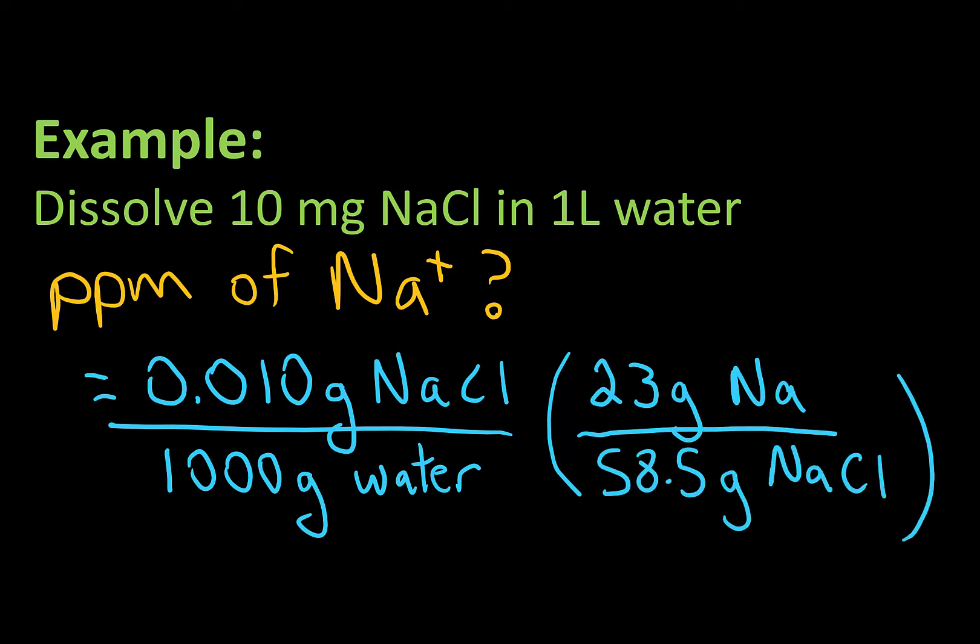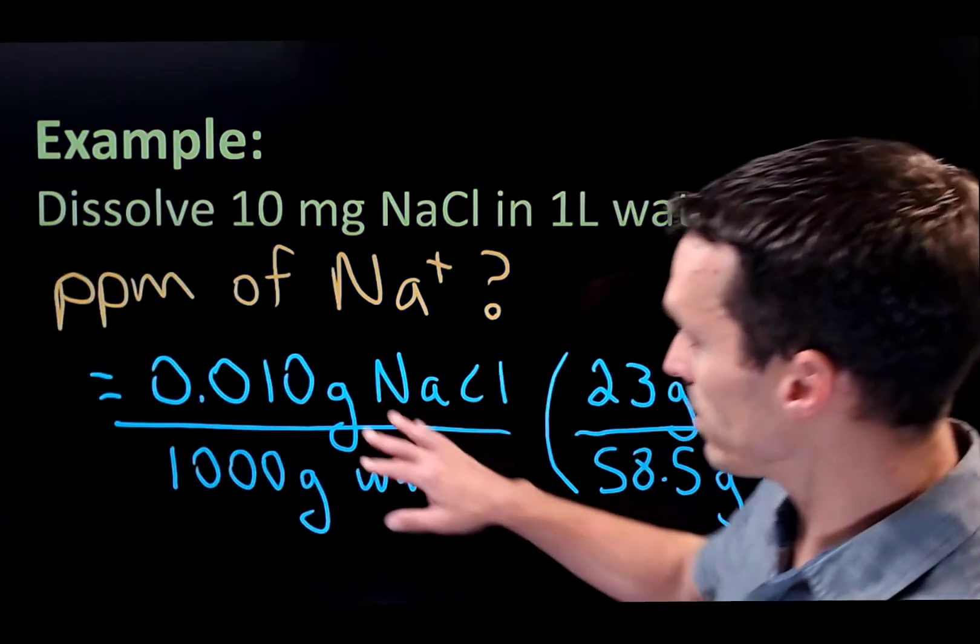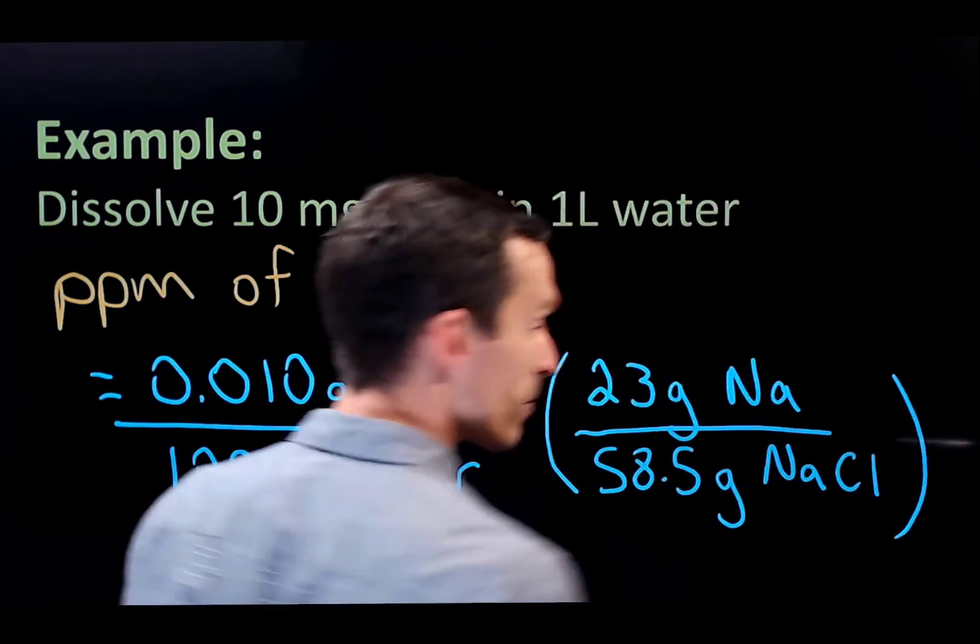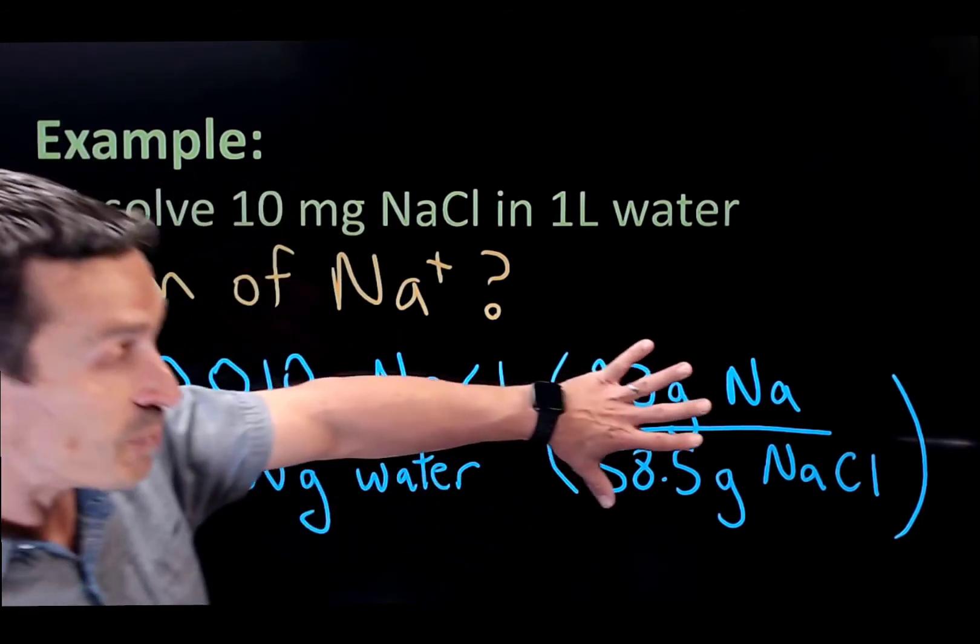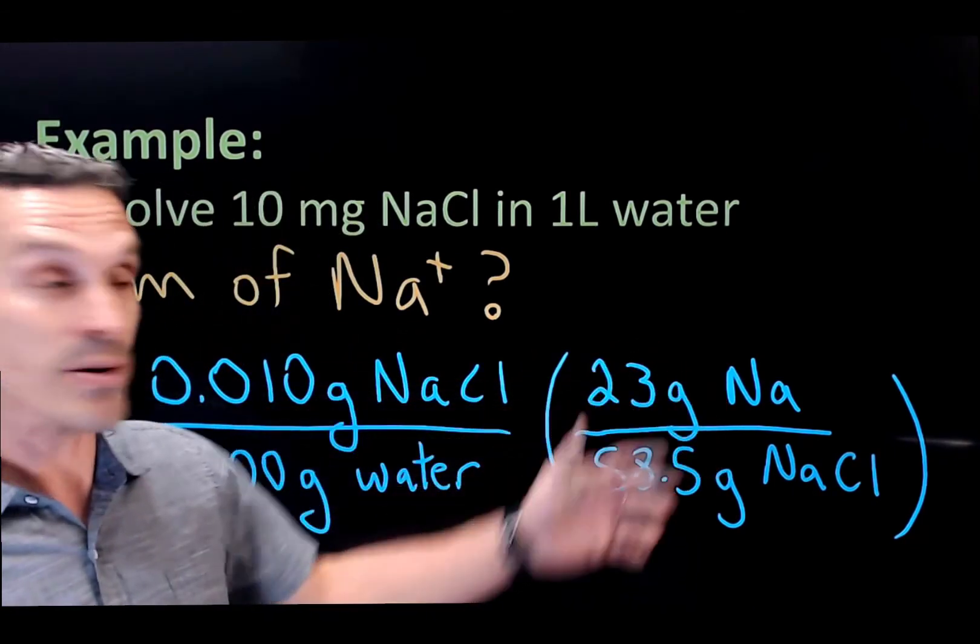we have to think about the atomic masses or the formula weight for sodium chloride. So if I had 58.5 grams of sodium chloride, or in other words, 1 mole, there would be 1 mole of sodium, or in other words, 23 grams. So you can actually see how this would cancel out. I've got grams of sodium chloride here. I've got grams of sodium chloride there.